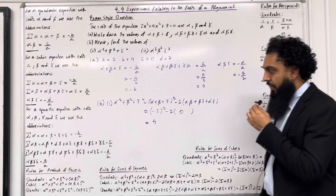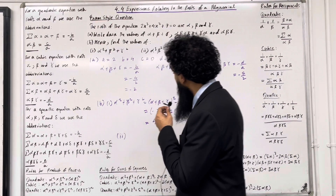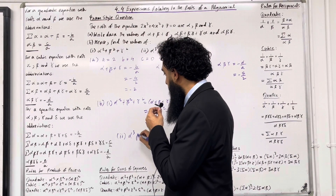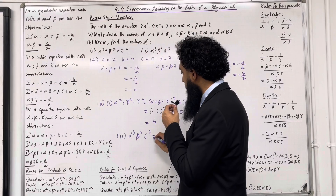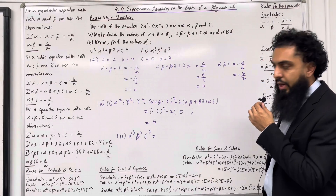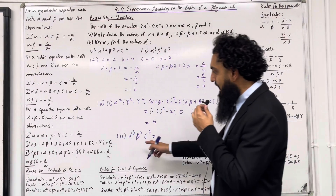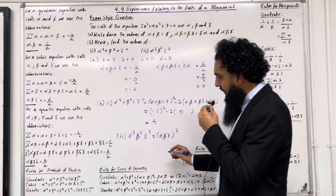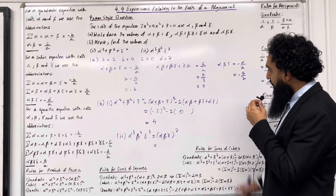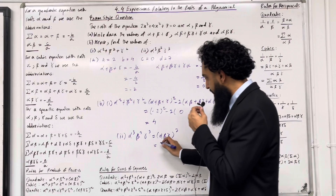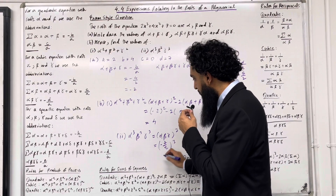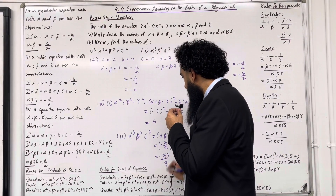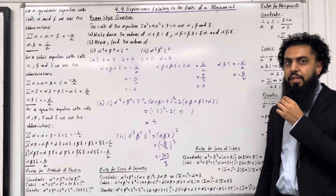Moving on to part B, part 2 — we want to work out alpha cubed beta cubed gamma cubed. Using rules for product of powers, this is the same as writing (alpha beta gamma) cubed. Alpha beta gamma is minus 7 over 2, so this is (minus 7 over 2) cubed, which gives minus 343 over 8. And so this completes the exam style question.